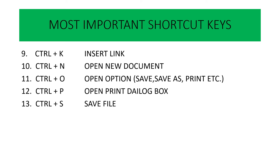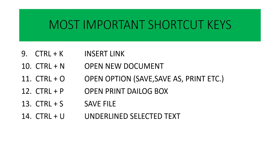Ctrl S — Ctrl S is used to save a file. हमारी file को save करने के लिए Ctrl S का use करेंगे. Ctrl U — Ctrl U is used to underline selected text. जितना भी text select किया है उसको underline देने के लिए Ctrl U का use करते हैं.